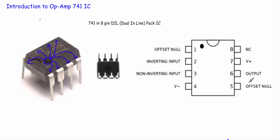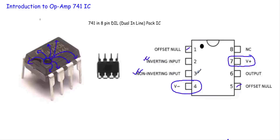This is the schematic diagram of the 741 IC. Terminals 1 and 5 are used as offset null. Terminal 7 connects to the positive supply, and terminal 4 connects to the negative power supply. We apply two inputs: the inverting (negative) input at terminal 2, and the non-inverting (positive) input at terminal 3. The output is taken from terminal 6, and terminal 8 is never used. All inputs, outputs, and supply voltages are applied with respect to ground.